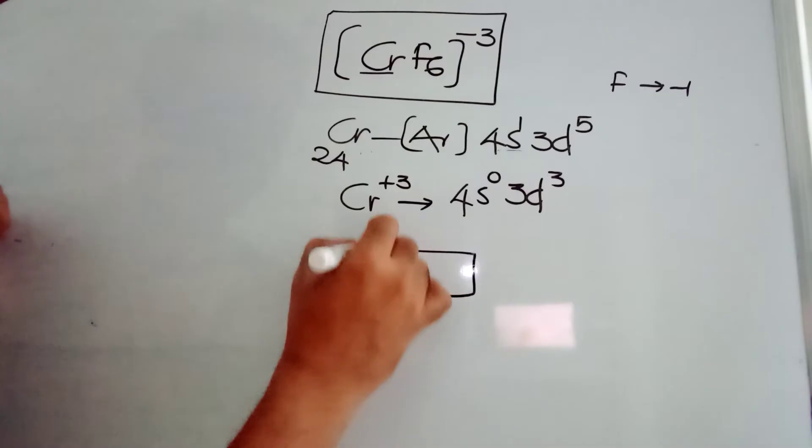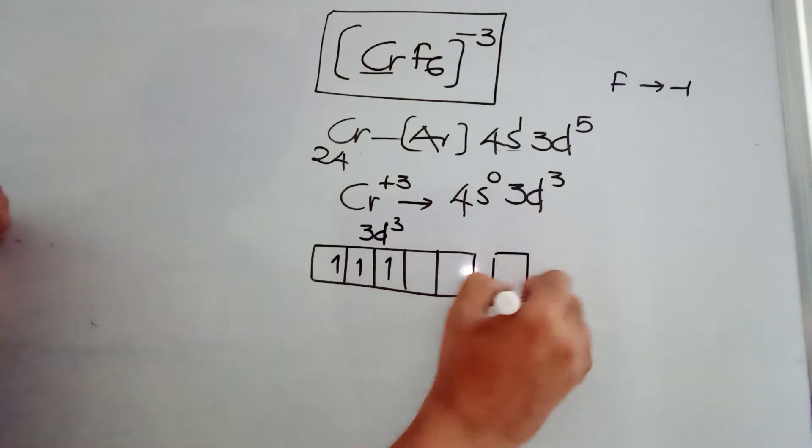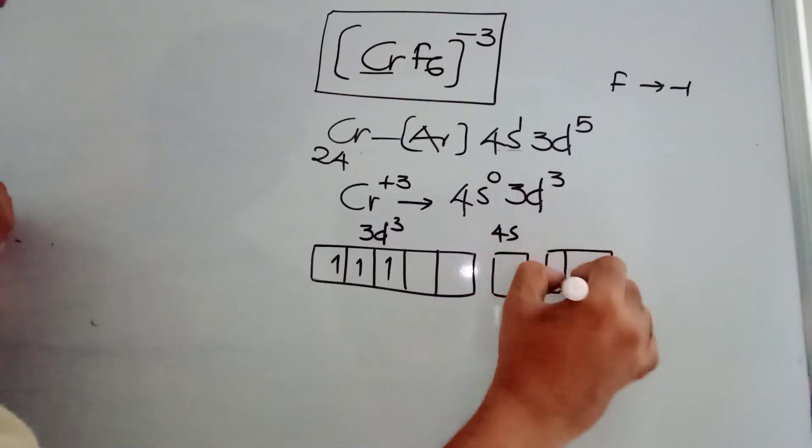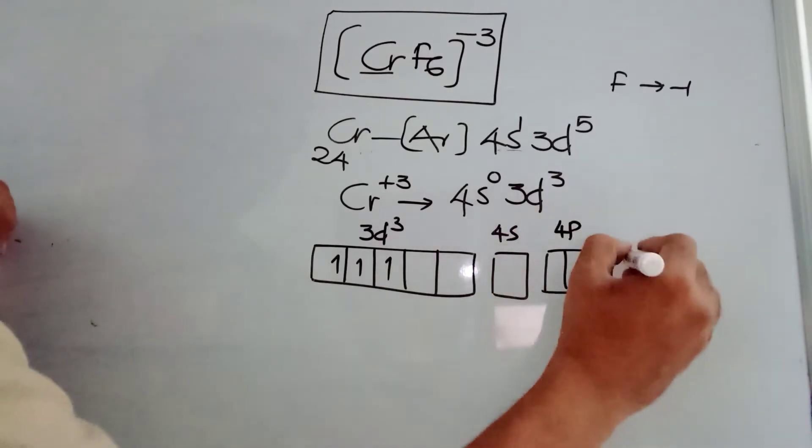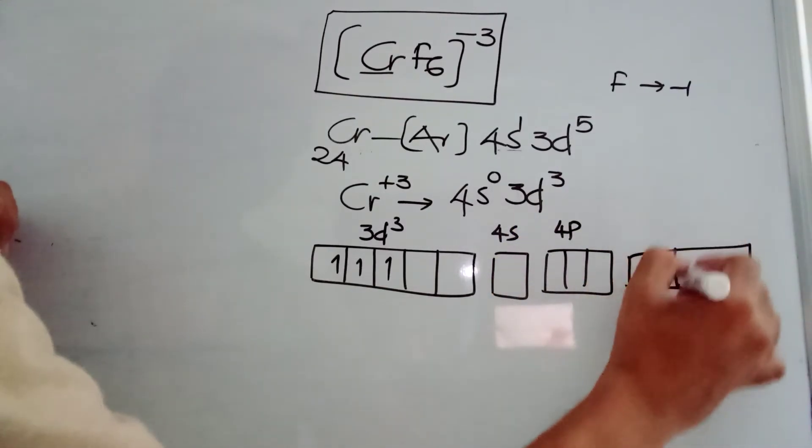So I am writing here, 3D3 configuration, it is like this: 1, 1, 1. And 4S orbital, it is vacant. 4P orbitals, vacant. 4D orbitals, also vacant.